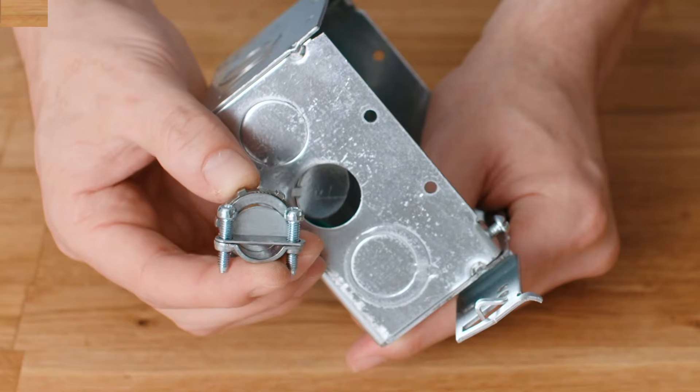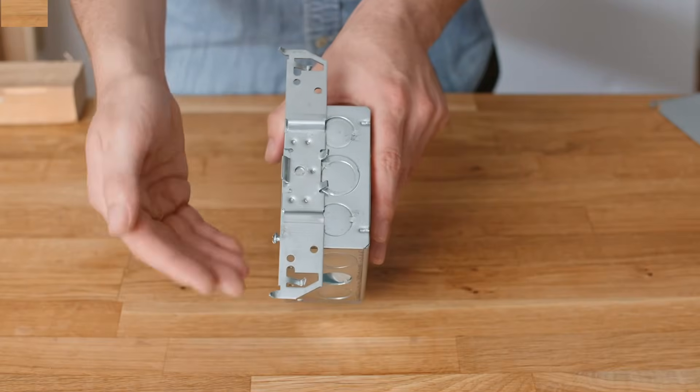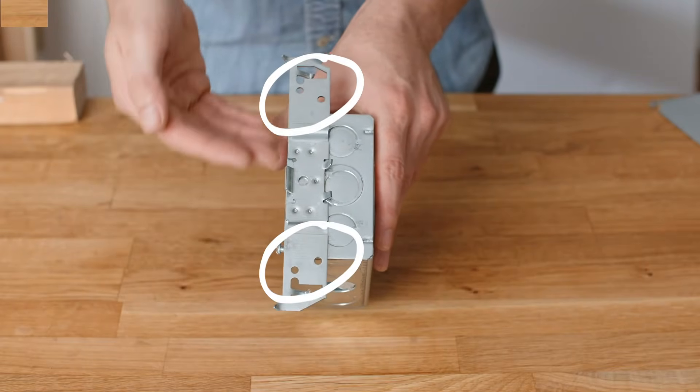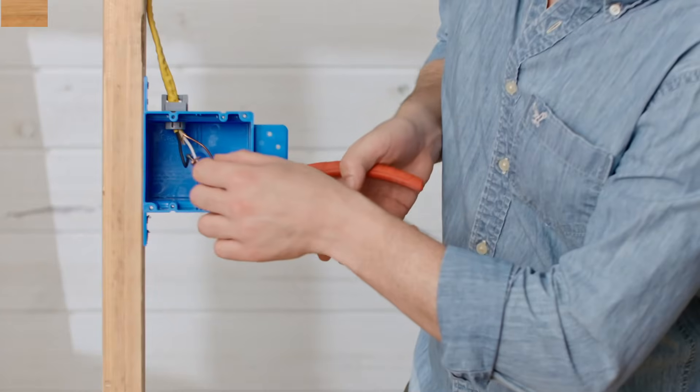With any box make sure it's securely mounted to your stud using these screw holes. And use an old work plastic box if your wall or ceiling is drywalled.